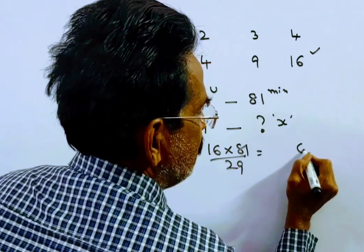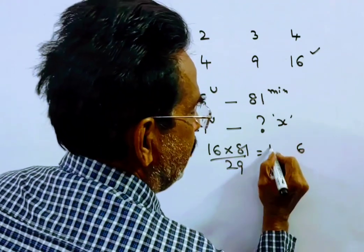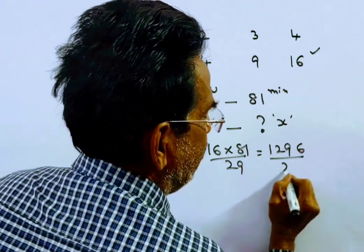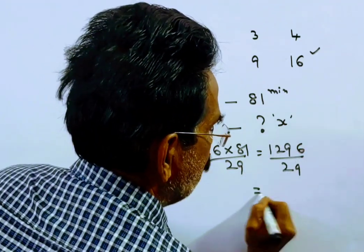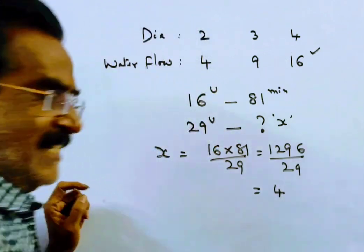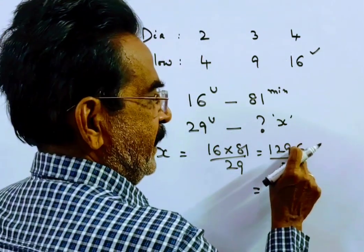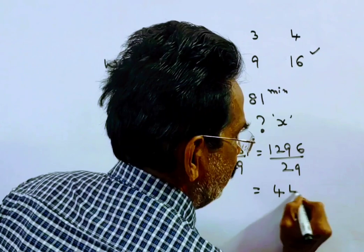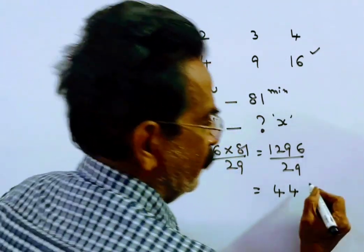16 once is 16. 16 eights 128 plus 1, 129 by 29. Friends, this is equal to 29 fours, 116, 13 remaining, 136. Again, 29 fours, 116, 20 remaining.